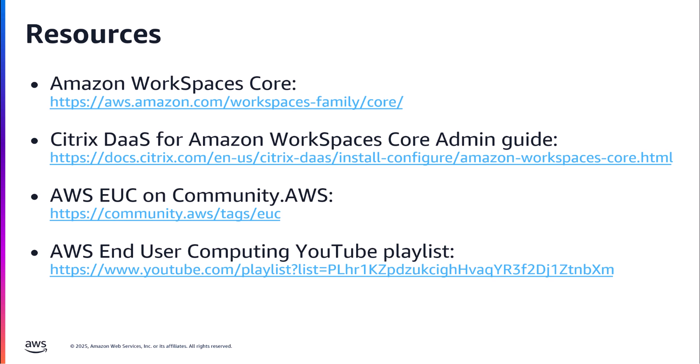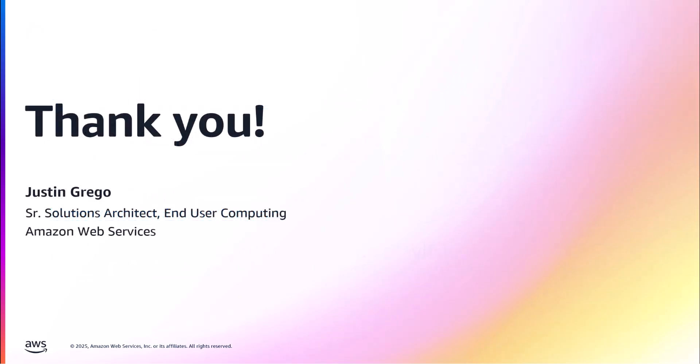And that wraps up our visual walkthrough of the first step of deploying Citrix DAS on Workspaces Core. In this video, we covered some of the prerequisites, a high-level overview of the solution, and then walked through the deployment of the first step of your journey — deploying Citrix Cloud Connectors on EC2. This is the first in a series of videos covering the end-to-end visual setup of the solution, so look forward to follow-up videos covering the remaining four steps. In the meantime, see the links in the description for resources around AWS EUC, including community articles and our video series on YouTube. Thank you so much, and I look forward to seeing you in the next video.